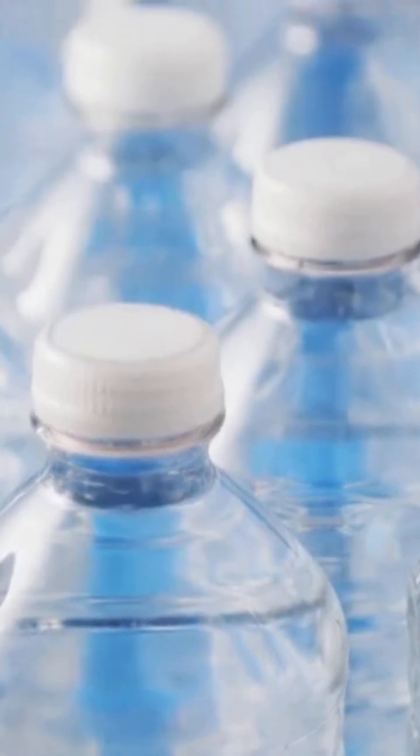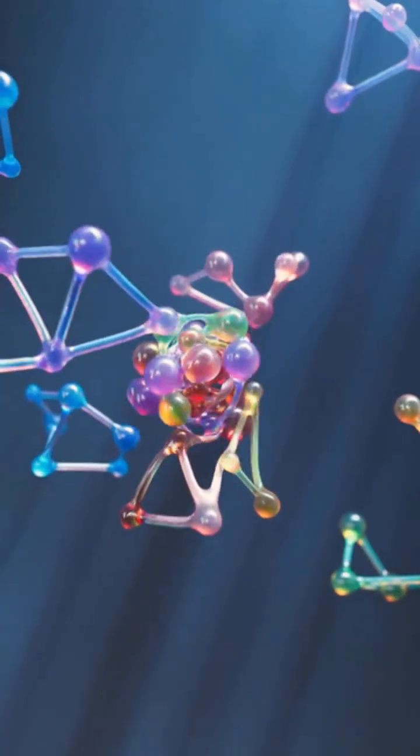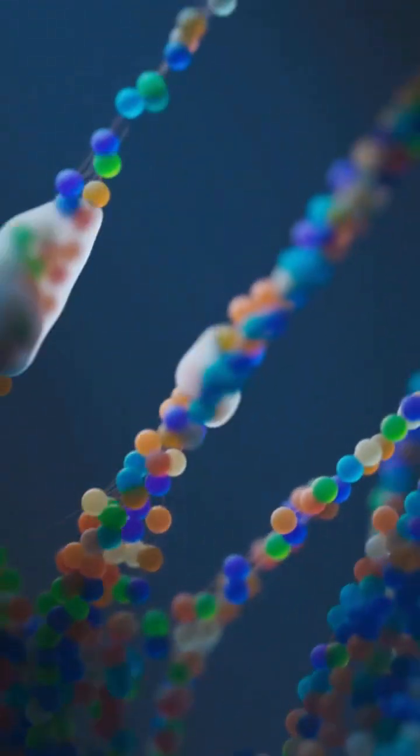Conventional plastics don't have this feature. That's why they persist for centuries. Gu's team created artificial chemical groups that mimic these natural structures and built them directly into plastic during manufacturing.